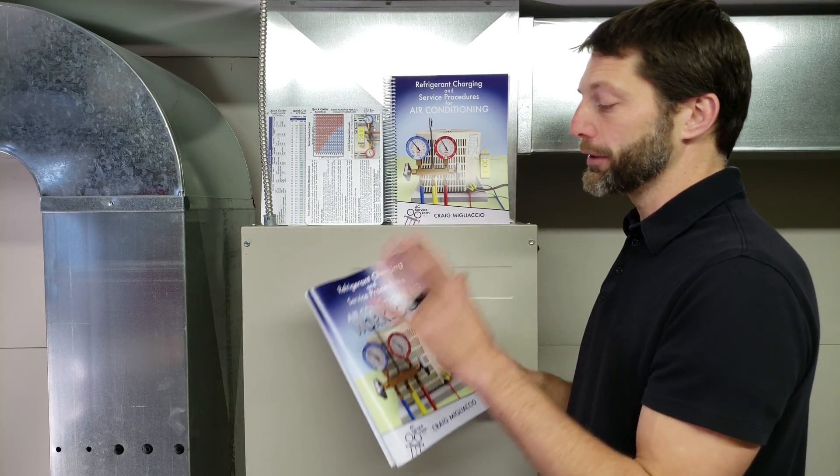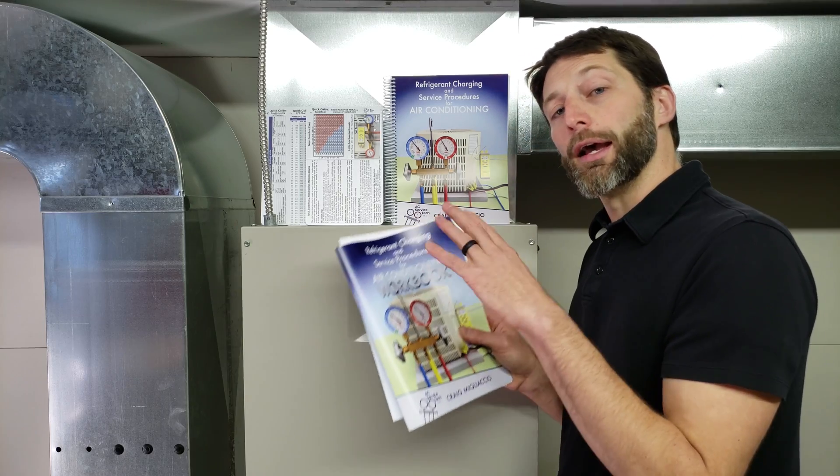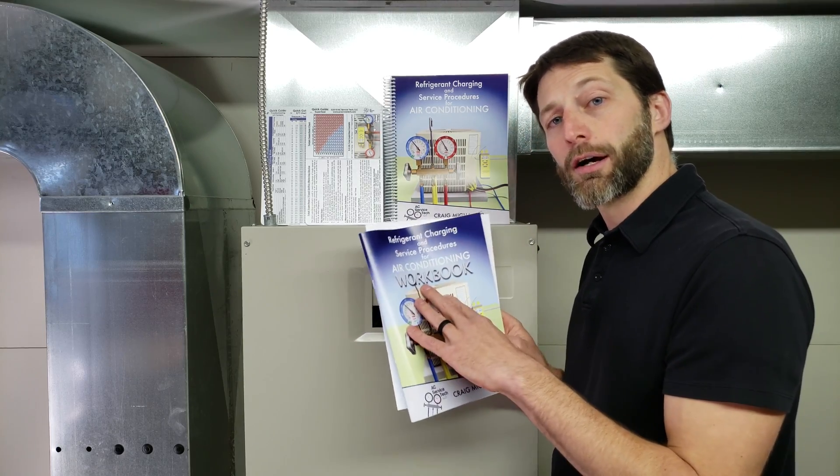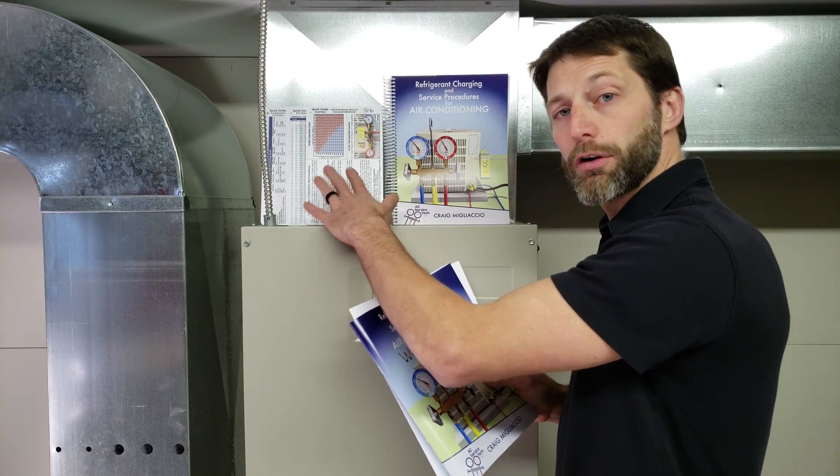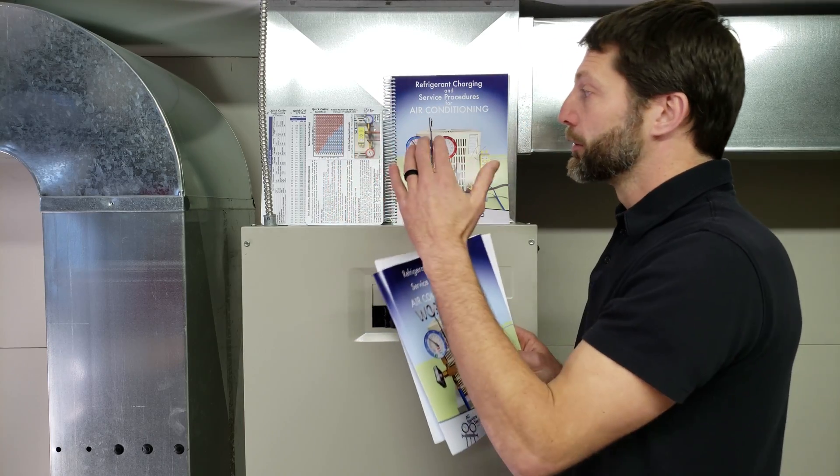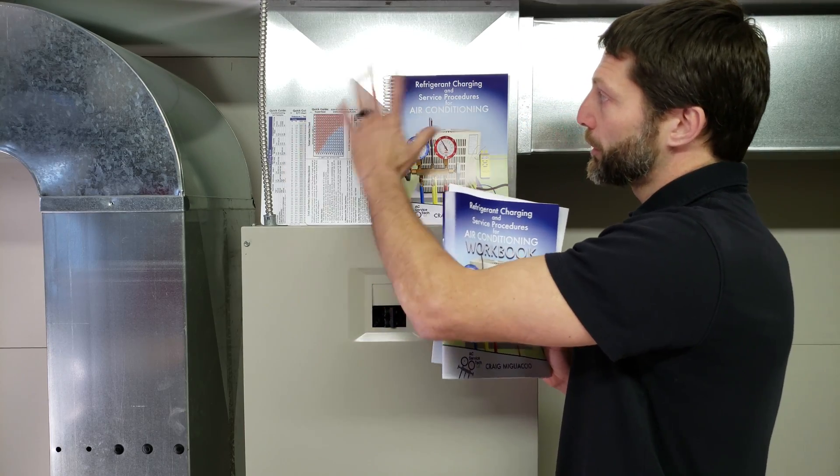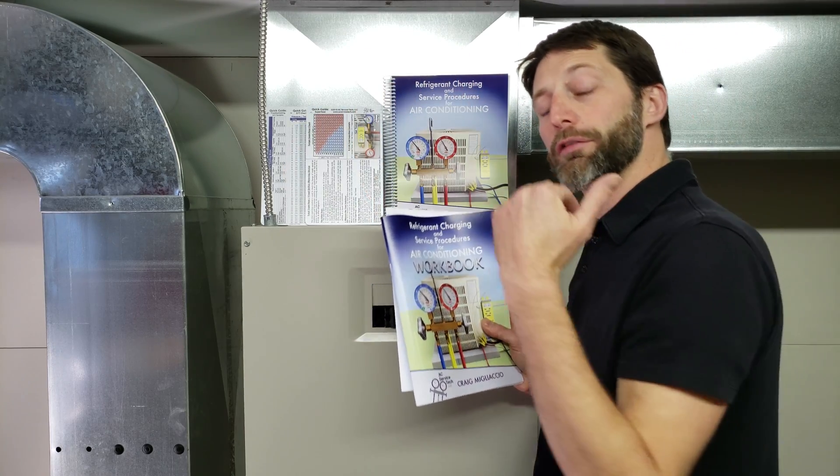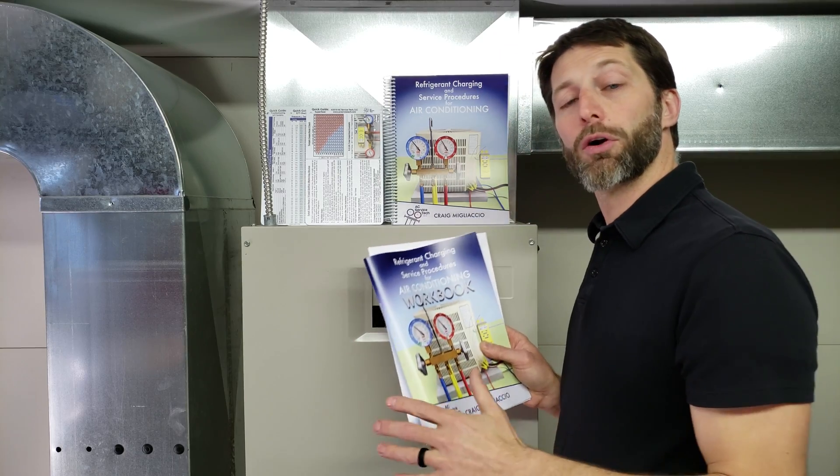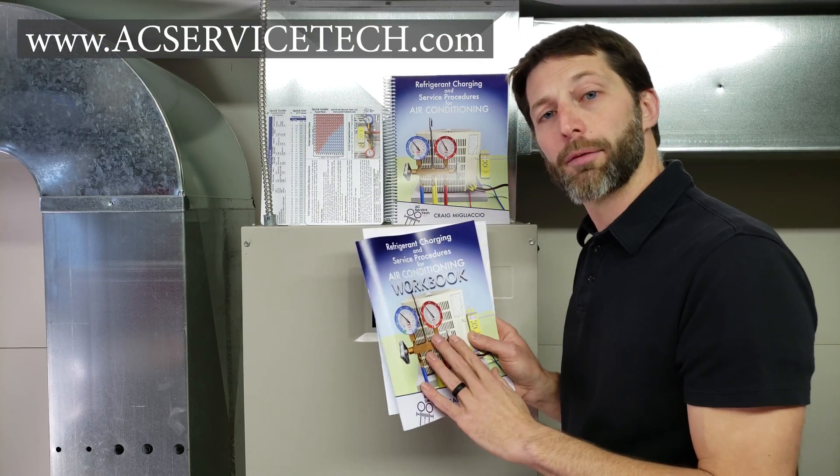This is available over at Amazon and also at our website at acservicetech.com. We also have our quick reference cards, so you should check those out as well. Each of these reference cards, the paperback and the workbook are all available over at Amazon.com and also at our website at acservicetech.com.